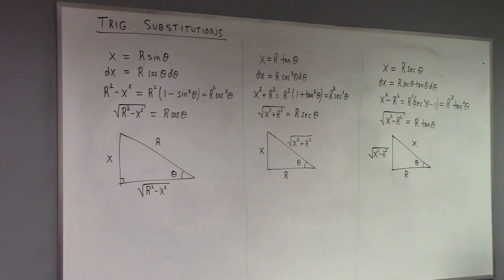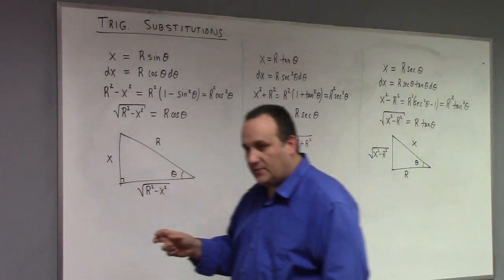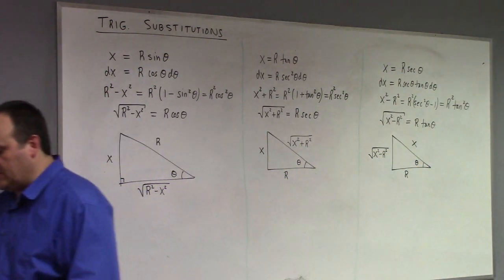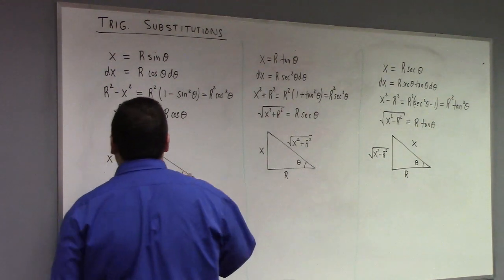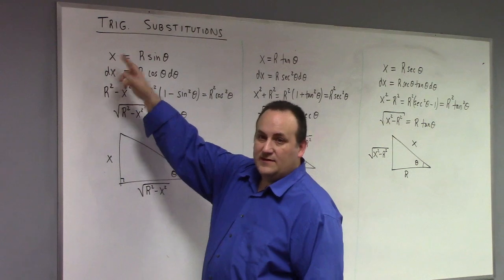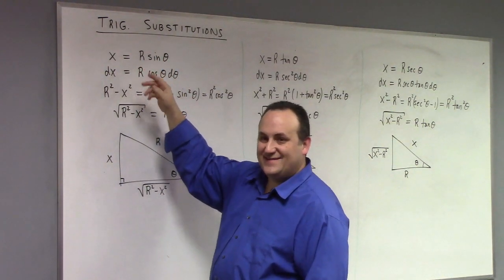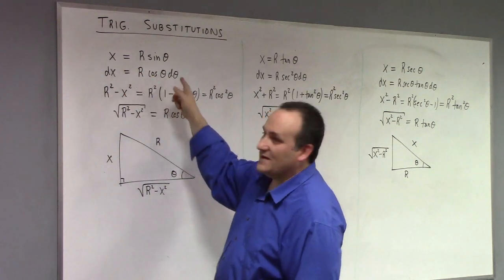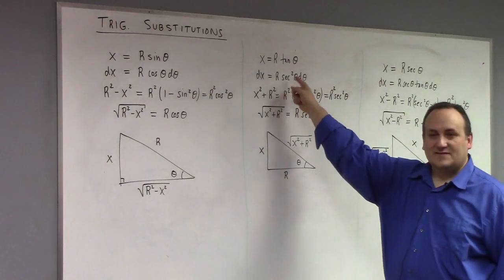For each substitution, as always with any u-substitution, there are two parts: you have to figure out how to change the integrand to the new variable, but you also have to figure out how to change the measure — to replace dx with du, or in this case with dθ. The cool thing is, because these are implicit substitutions — stating old variable equals function of new variable — to find the differential of x, you just differentiate. So dx is r·cosine(θ)dθ for the first one, and r·secant²(θ)dθ for the second.